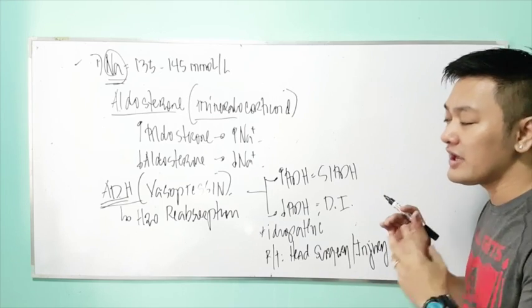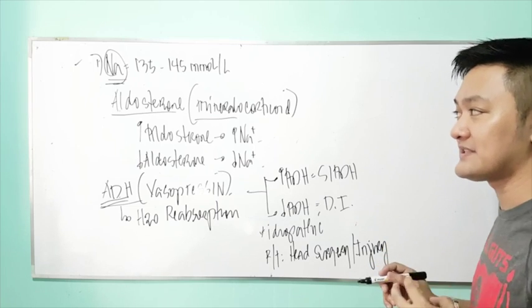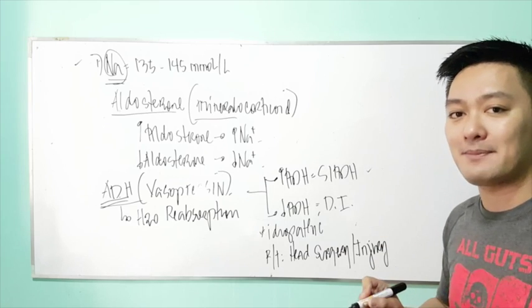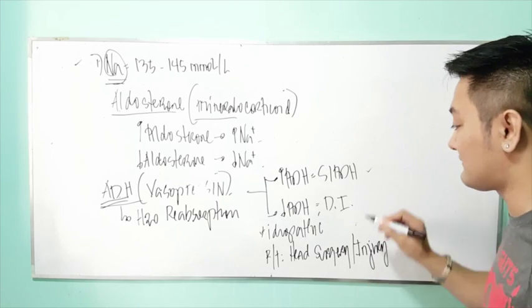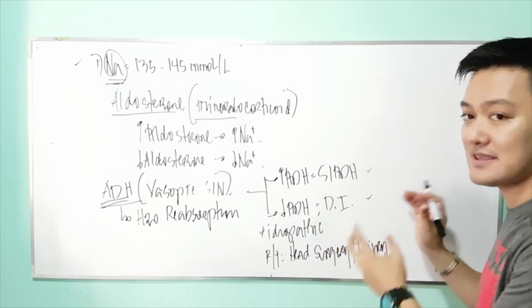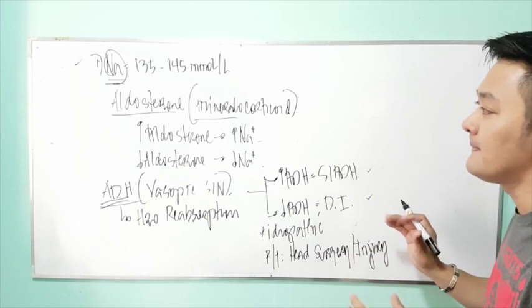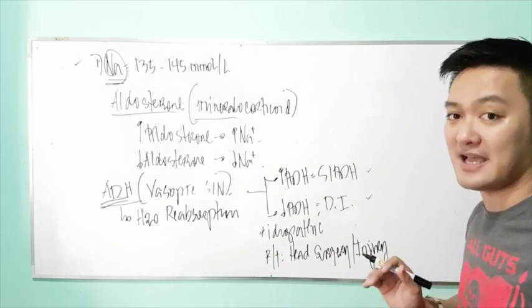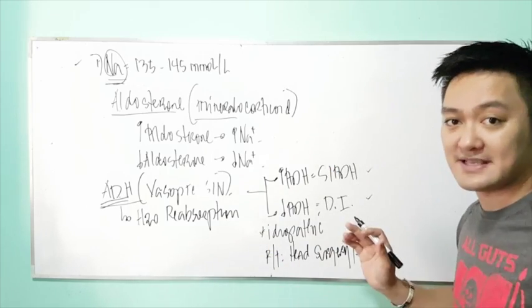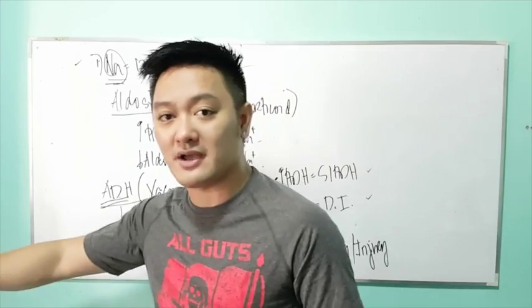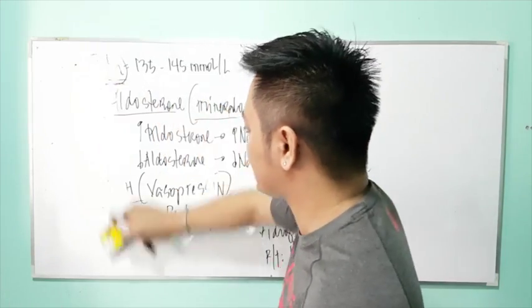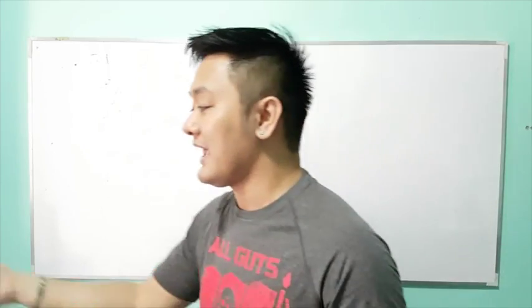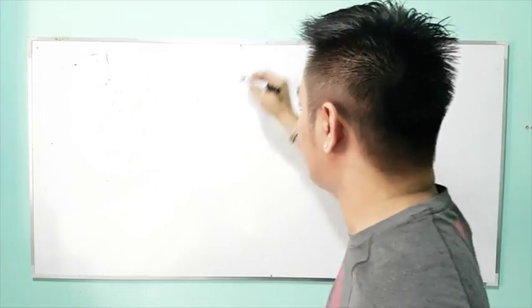In your examination, identify what specific sodium imbalance occurs with SIADH and what type occurs with diabetes insipidus. On one side is hypersecretion of ADH — SIADH. On the other side is hyposecretion of ADH — diabetes insipidus.